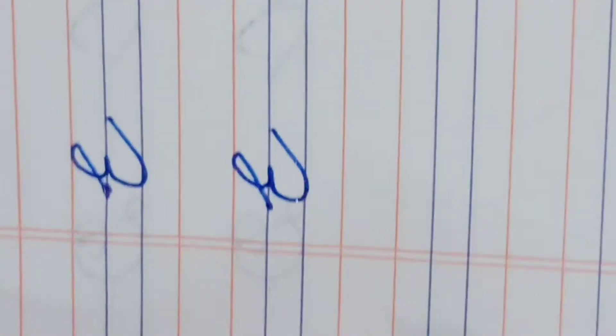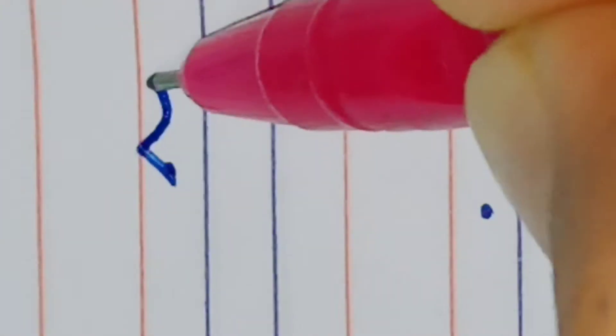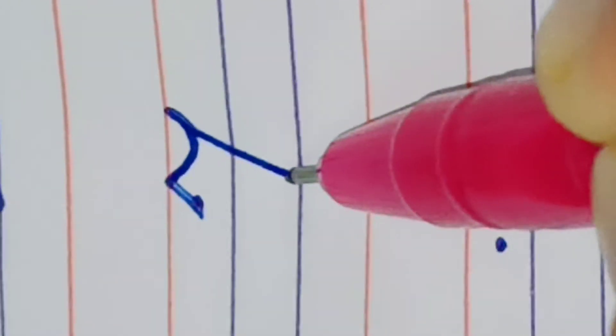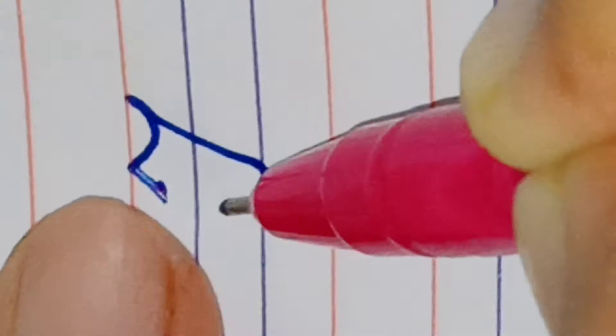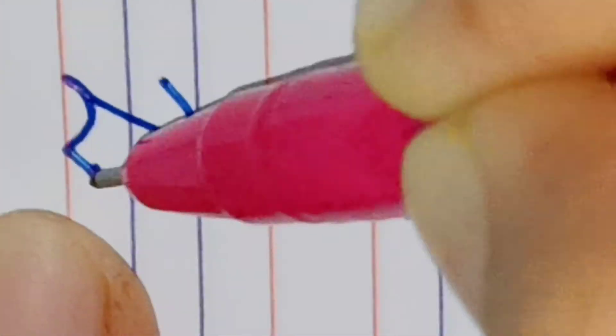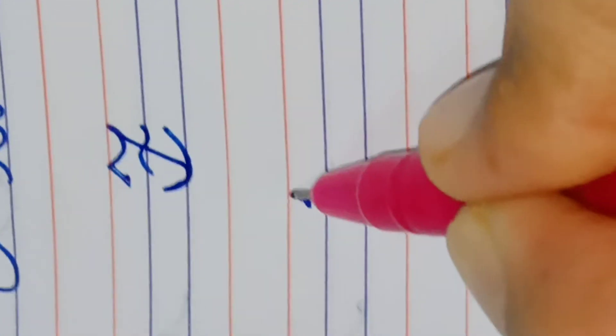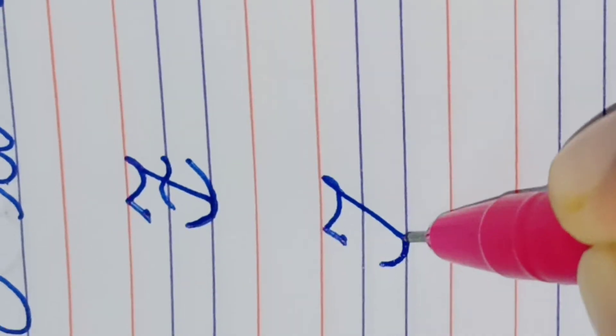F ke liye, first line se thoda sa niche door, dekho. Thoda sa up, thoda sa down. This is slanting line me la na, jitna upar hai, utna niche le ke hain na, bata. Yeh donno equal ane chahiye. This is F. Again, slanting line. This is F.